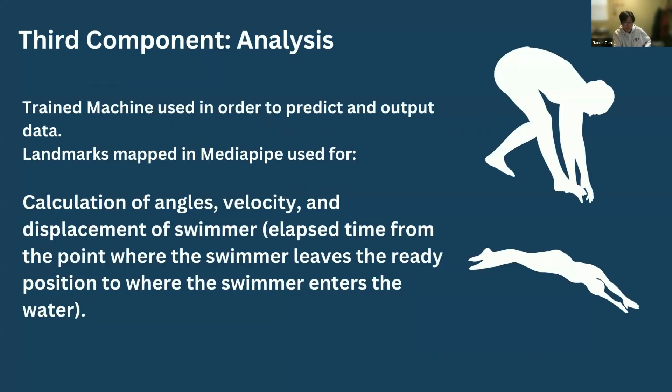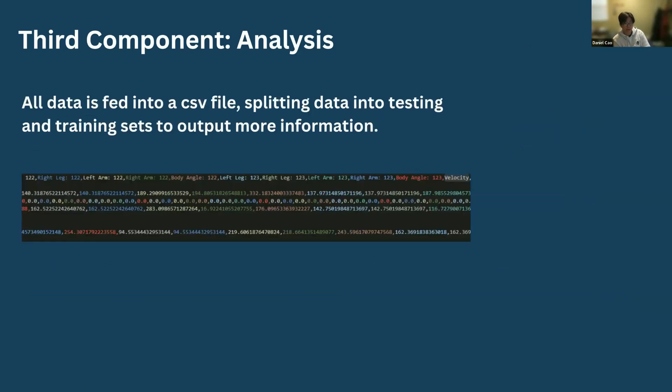And the third component is AI analysis, which will use a trained machine in order to predict and output data. And specific landmarks that are mapped in MediaPipe are used to determine a few data points that are used for the AI engine, including all of the key angles of the swimmer's dive along with the velocity of the swimmer, which is calculated from the swimmer's displacement and elapsed time from the point where the swimmer leaves the ready position to when the swimmer enters the water. The AI engine takes all of this as a CSV file and selects features from the data frame, splitting it into testing and training sets and then outputting more information. And the code here shows the different angles of the body at each frame during the video. So left arm 122, right arm 122.